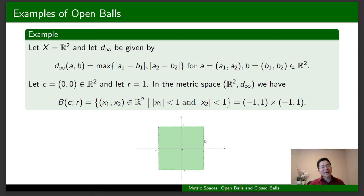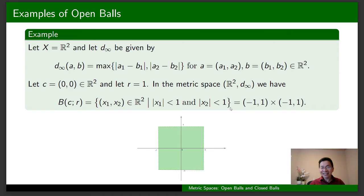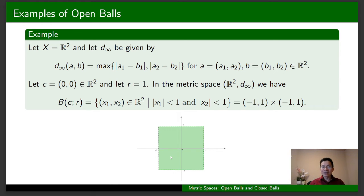In the third example we consider X = R² again, but with the infinity distance given by this formula. It is not hard to obtain the representation for the open ball centered at C with radius R. If you know about Cartesian products, you'll see that the open ball here is the Cartesian product of the open interval (−1, 1) with itself. So in this example, the open ball centered at C with radius R is a square. It is very interesting that the same set X with different metrics gives different metric spaces and therefore different representations for the open ball.